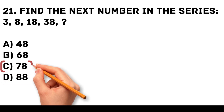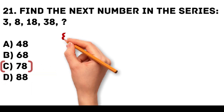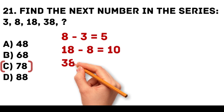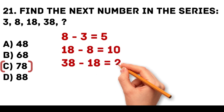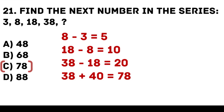Answer: C. 78. The differences between the numbers double each time. 8 minus 3 is equal to 5. 18 minus 8 is equal to 10. 38 minus 18 is equal to 20. 38 plus 40 is equal to 78.